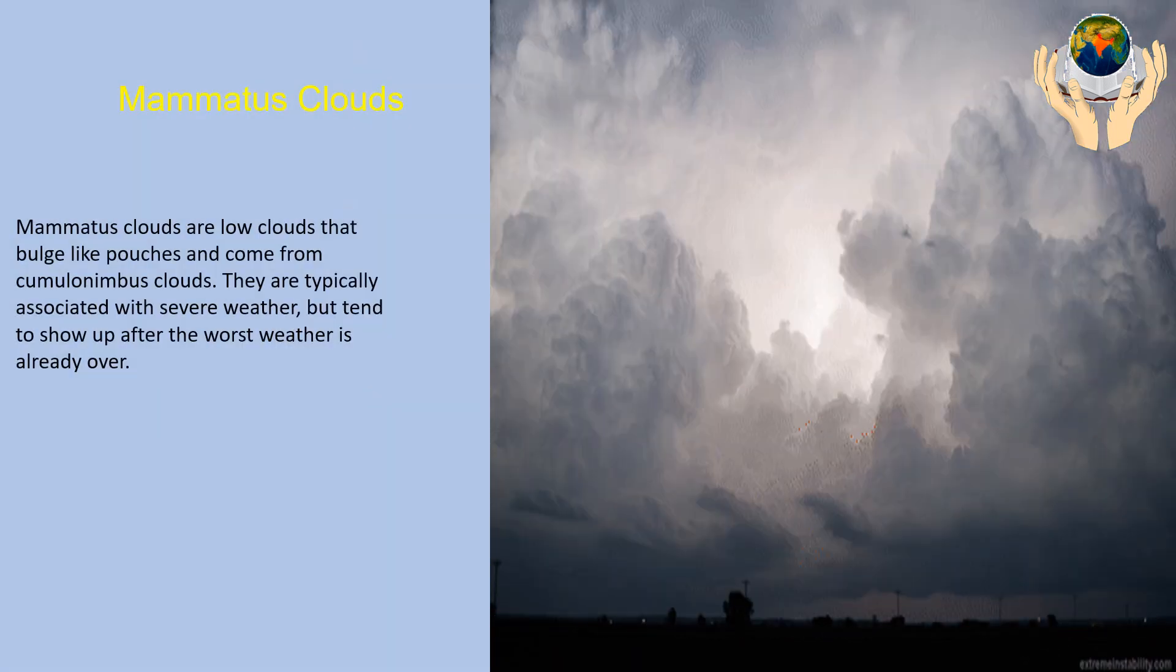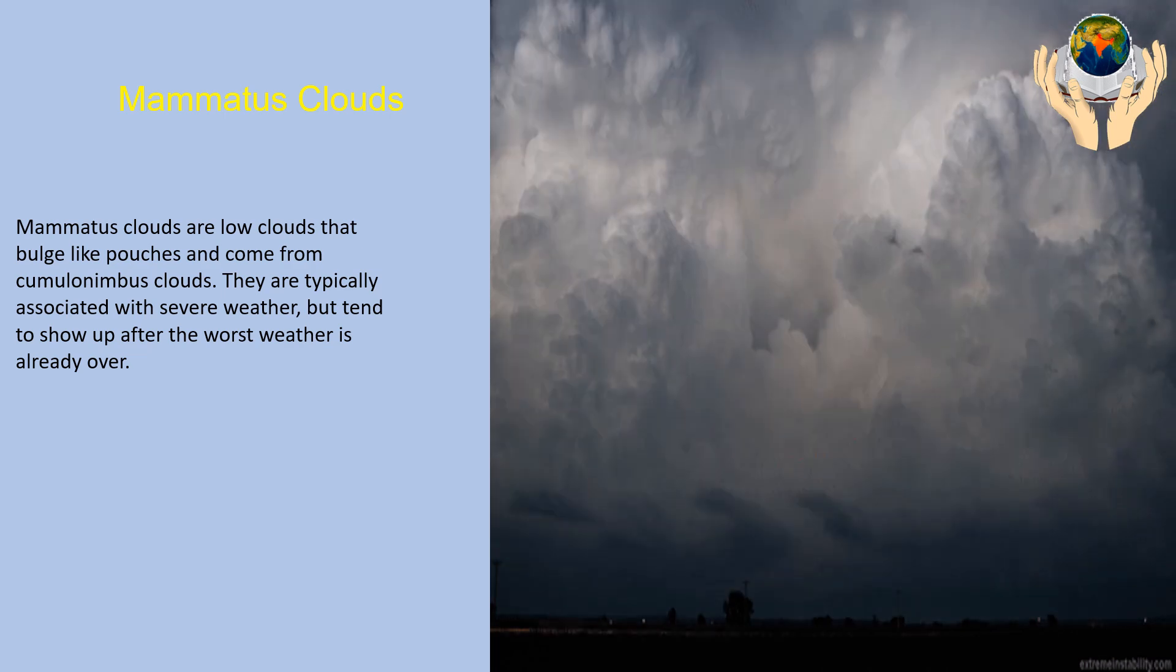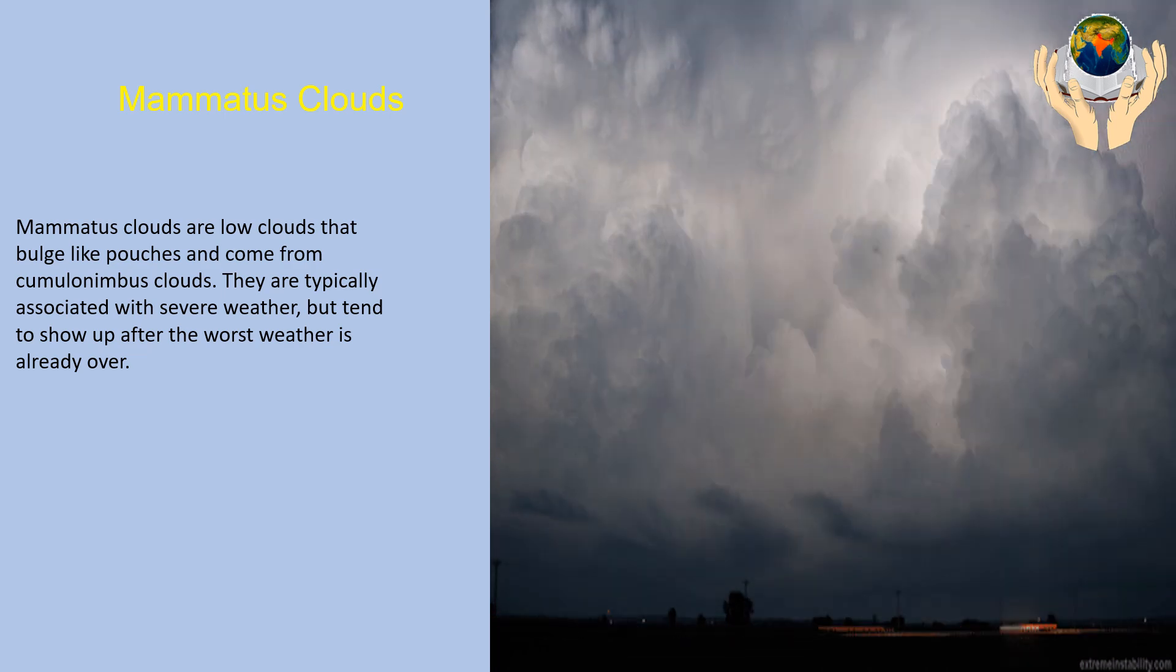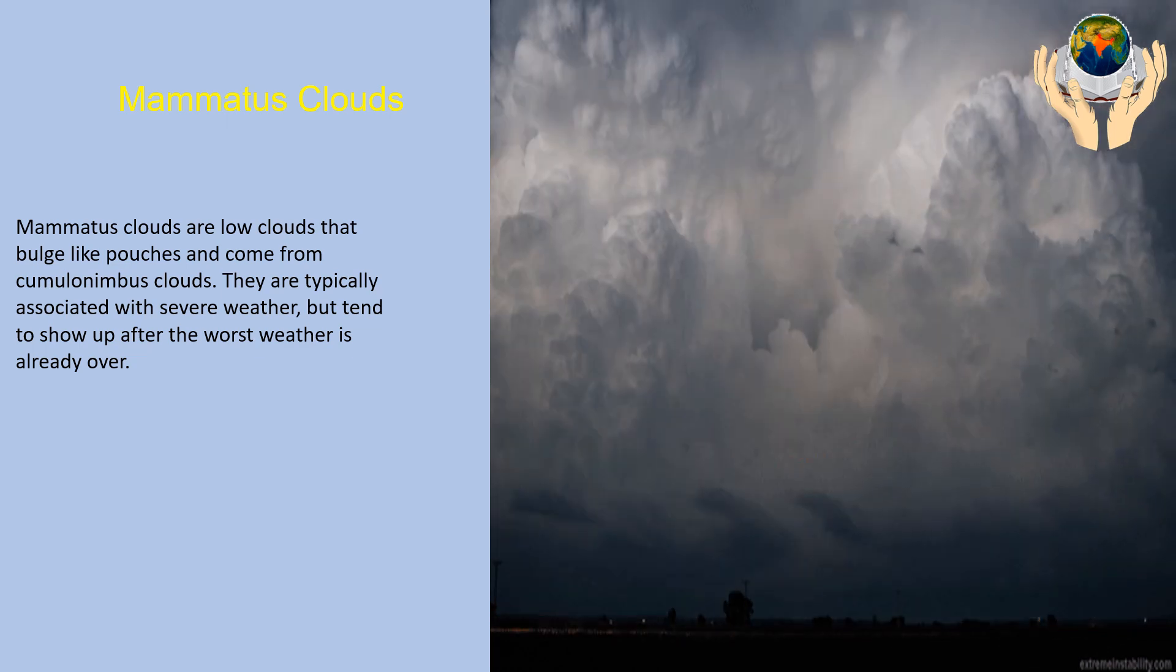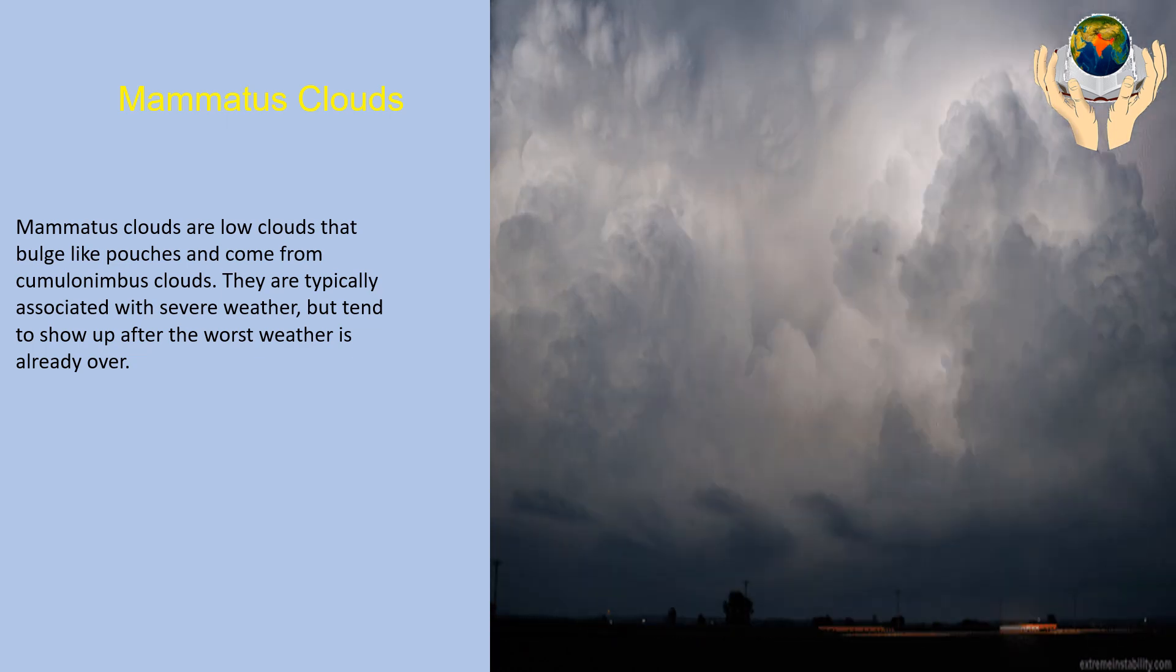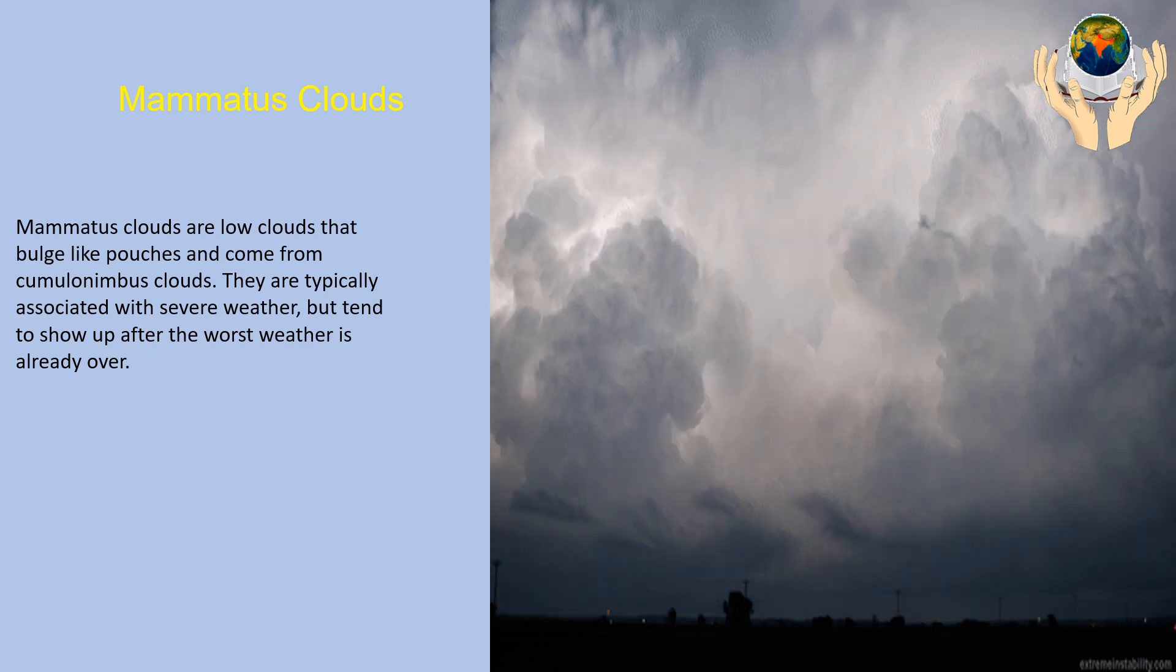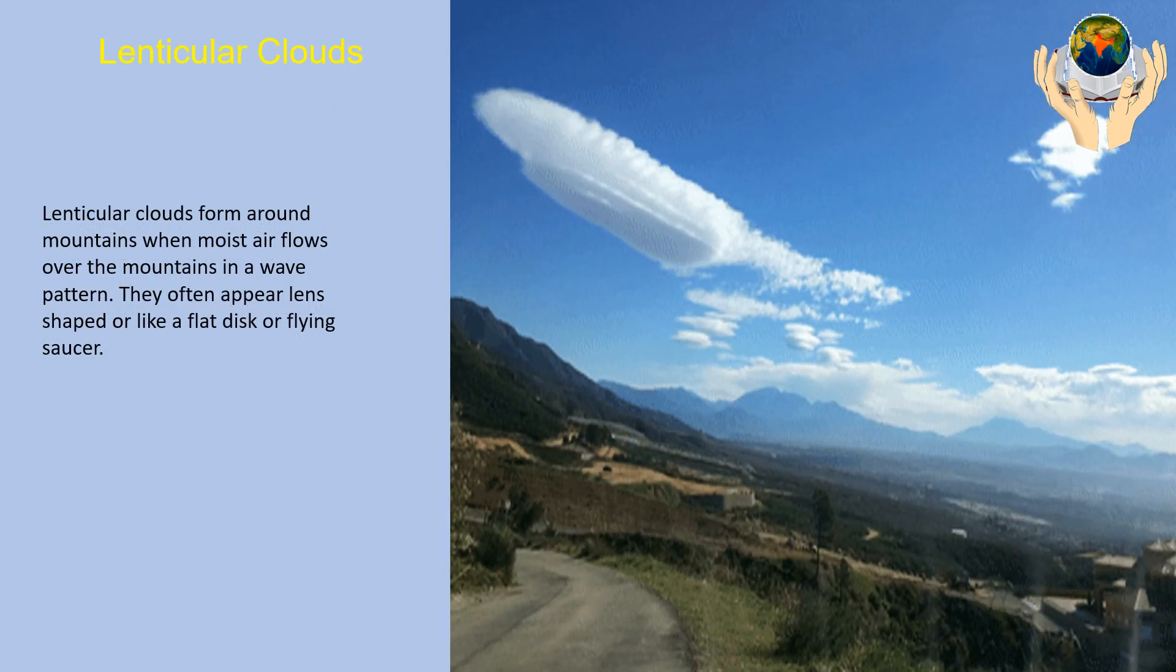Mammatus clouds. Mammatus clouds are low clouds that bulge like pouches and come from cumulonimbus clouds. They are typically associated with severe weather but tend to show up after the worst weather is already over.